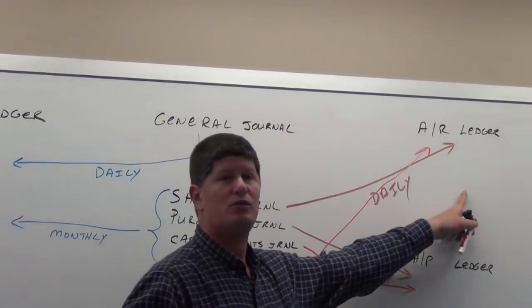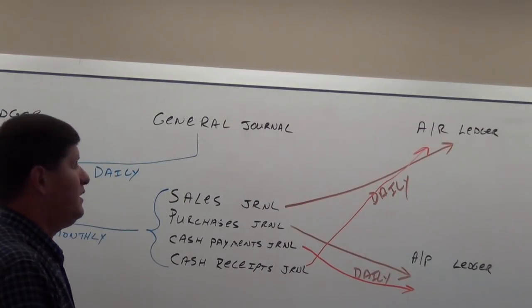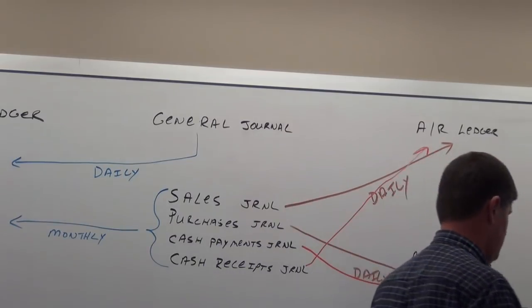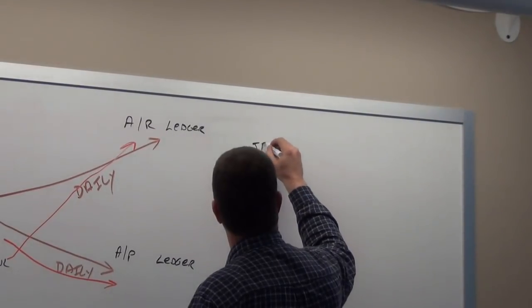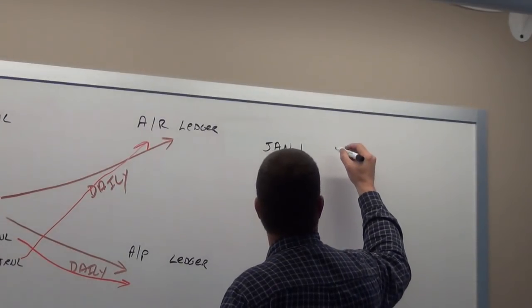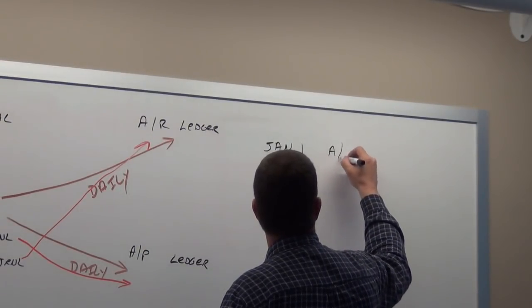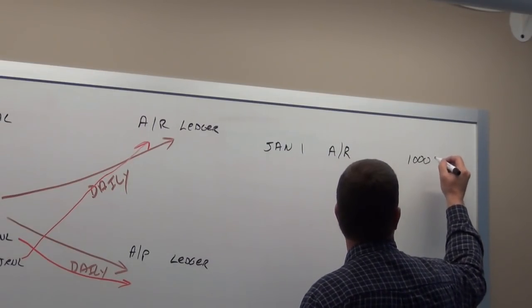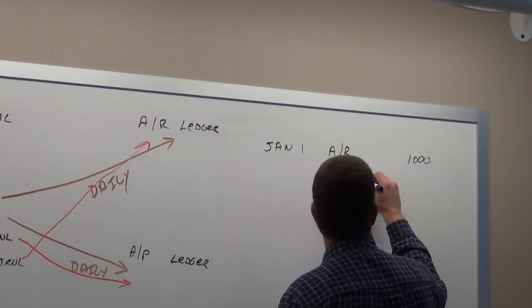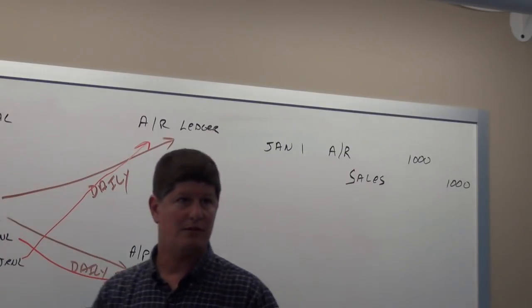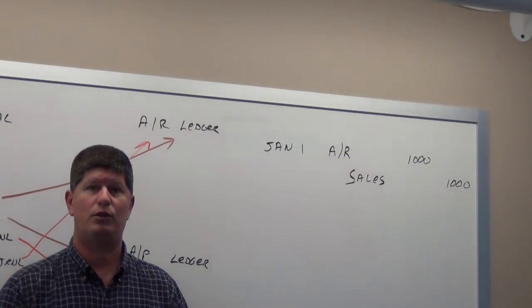You guys remember these work a little bit different than the general ledger. In the general ledger when we have a journal entry, let's say we do a journal entry - January 1 we make a sale. So we have accounts receivable debit for say a thousand dollars and sales credit for a thousand dollars. If we were entering it in the general journal that's what it would look like.